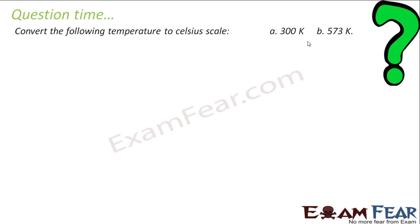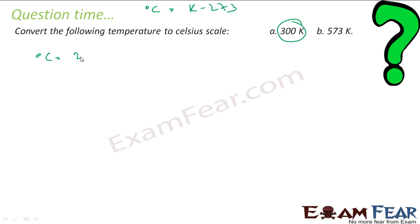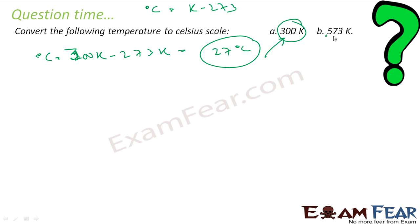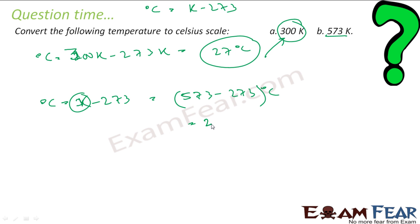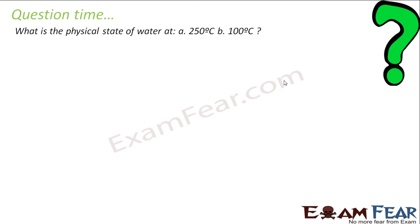Let's take some questions. Convert 300 kelvin to Celsius: degree Celsius equals kelvin minus 273, so 300 minus 273 equals 27 degrees Celsius. Also, 573 kelvin minus 273 equals 300 degrees Celsius. So 573 kelvin is 300 degrees Celsius, and 300 kelvin is 27 degrees Celsius.